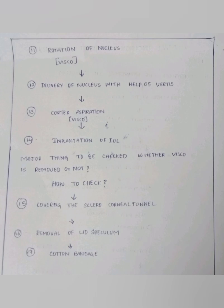The eleventh step is rotation of the nucleus — rotation of the nucleus to the anterior chamber. Again, viscoelastic is injected through the side port to form the anterior chamber. The twelfth step is delivery of the nucleus with the help of a vectis. Vectis is an instrument that helps in delivery of the nucleus.